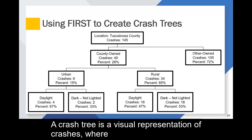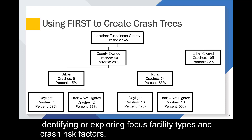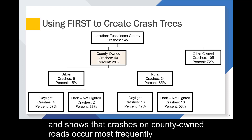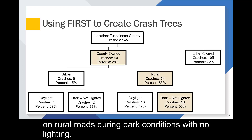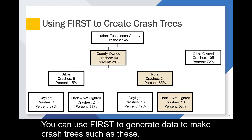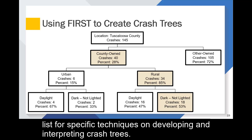A crash tree is a visual representation of crashes where each branch represents a variable of interest. They are helpful for identifying or exploring focus facility types and crash risk factors. This crash tree continues with the Tuscaloosa County examples and shows that crashes on county-owned roads occur most frequently on rural roads during dark conditions with no lighting. These findings might inform your selection of focus facility type or crash risk factors. You can use FIRST to generate data to make crash trees such as these. Refer to the companion video in the resources list for specific techniques on developing and interpreting crash trees.